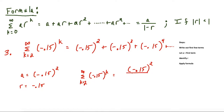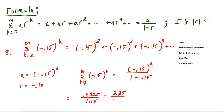Plugging into the formula: negative 0.15 squared divided by one minus negative 0.15, which changes to one plus 0.15. Now we simplify — we could use a calculator, or rearrange the decimals to simplify by hand, then divide the top and bottom by 25. Our final answer to the last question is 9 over 460.